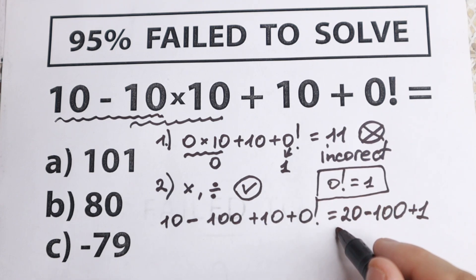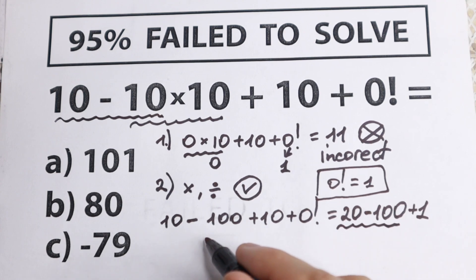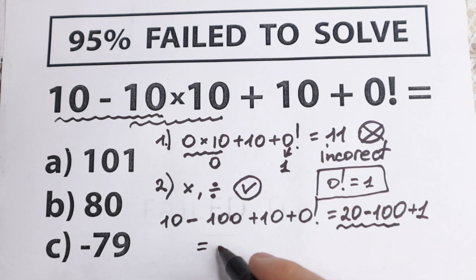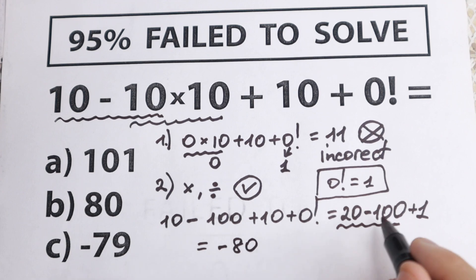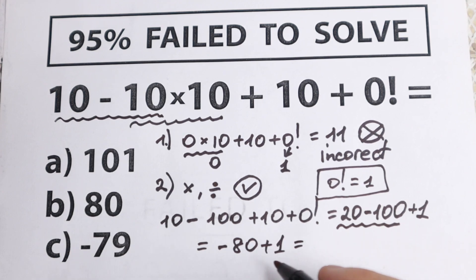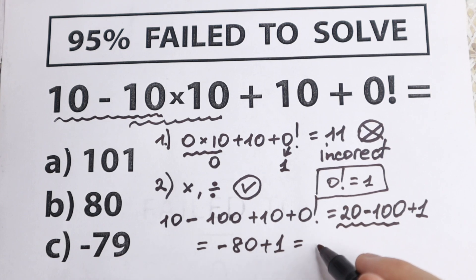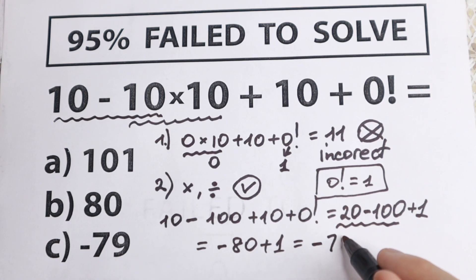Let's find our final answer. We have 20 minus 100. We all know that this will equal minus 80. And plus 1 in the end. The classic school rule right here. Minus 80 plus 1 equals minus 79.